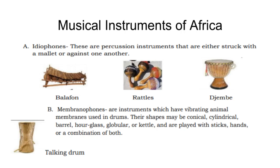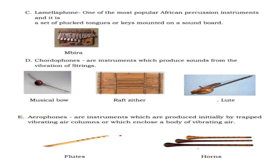Musical instruments of Africa. Idiophones are percussion instruments that are either struck with a mallet or struck against each other. Lamellophone is one of the most popular percussion instruments — it is a set of plucked tongues or keys mounted on a sound board. An example is the mbira. Chordophones are instruments which produce sounds from the vibrations of strings.